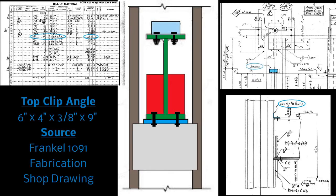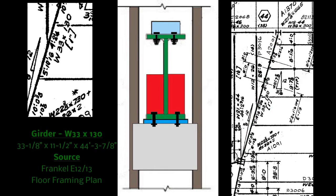The girder is attached to this clip by means of two bolts. As for the girder itself, you can see that in Frankel E-1213 floor framing plan. The girder is 33 1/8 inches by 11 1/2 inches by 44 foot 3 7/8 inches.